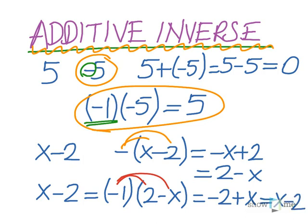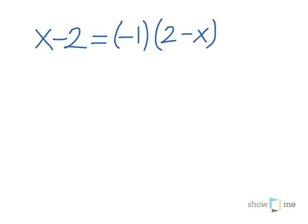So as a summary, if you have a binomial like x - 2, you can write the same thing as -1 times (2 - x). You just switch the places and then you multiply by -1.